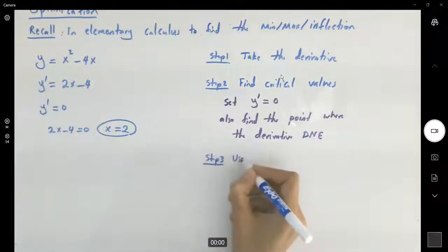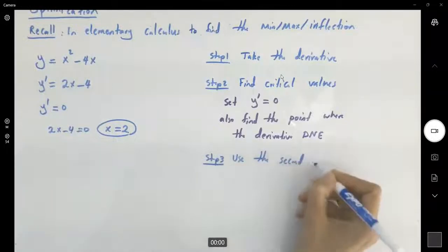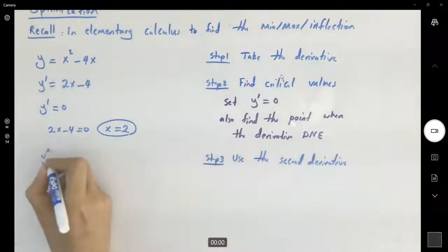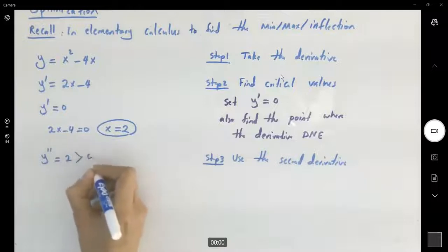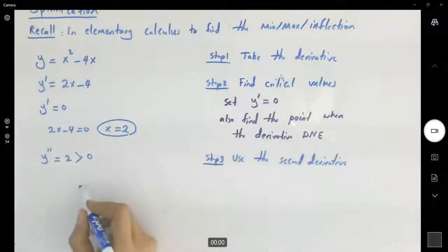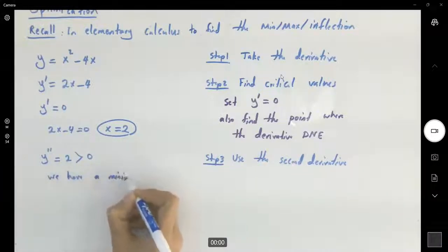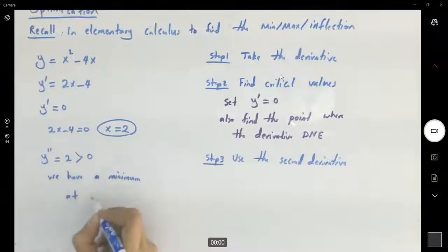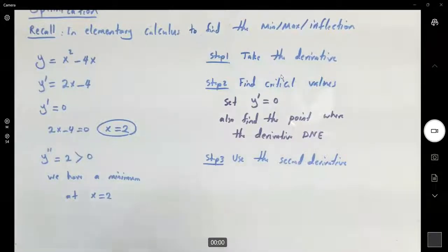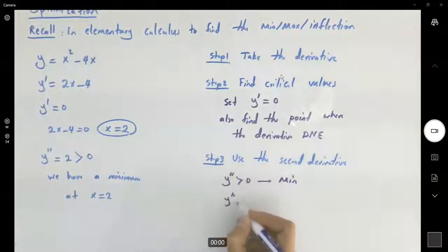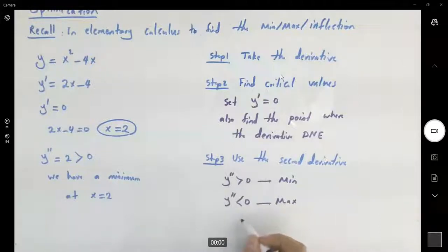Step three: use the second derivative. This was the second derivative test. The second derivative is equal to 2. Since it is positive, at this point you have a minimum at x equals 2. If the second derivative at that point is positive, then you have a minimum. If the second derivative is negative, you have a maximum. And if the second derivative is equal to zero, you need to check the concavity.